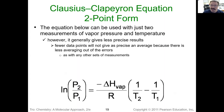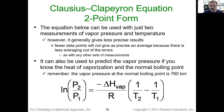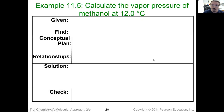If we don't have a whole bunch of data and can't make that plot, we can use the two-point form of the Clausius-Clapeyron equation. If I know the substance and have two different temperatures and know one of the pressures, I can find the other pressure. Or if I know two pressures and one temperature, I can find the other temperature. What we have here is five variables: two pressures, two temperatures, and the enthalpy of vaporization. If we know any four of those variables, we can solve for the other one.